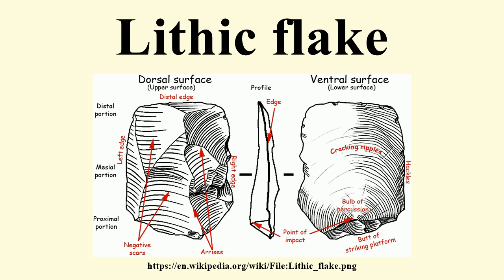The object or piece, or the rock being reduced by the removal of flakes, is known as a core. Once the proper tool stone has been selected, a percussor or pressure flaker is used to direct a sharp blow, or apply sufficient force, respectively, to the surface of the stone, often on the edge of the piece.